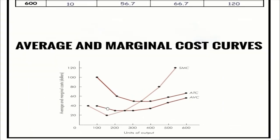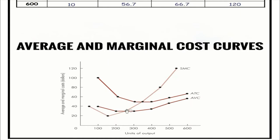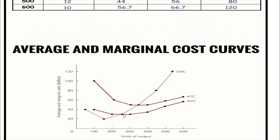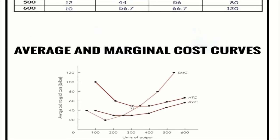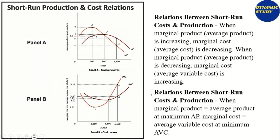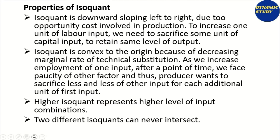Key points here: short-run marginal cost reaches its minimum first, then average variable cost reaches its minimum after that, and average total cost reaches its minimum level of output after that. Regarding the cost and production relationship: when marginal product and average product increase, cost decreases. When they are equal, cost values are also equal. And when marginal product and average product decrease, cost increases. That is the relationship in short.